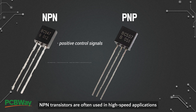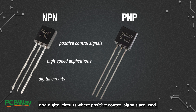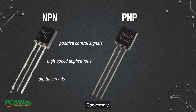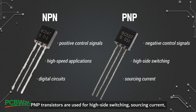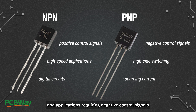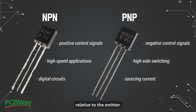NPN transistors are often used in high-speed applications and digital circuits where positive control signals are used. Conversely, PNP transistors are used for high-side switching, sourcing current, and applications requiring negative control signals relative to the emitter.